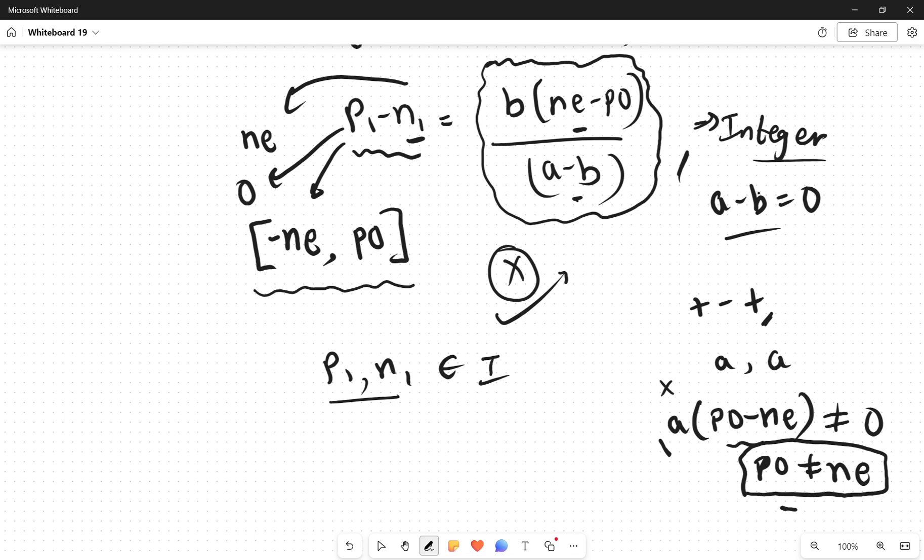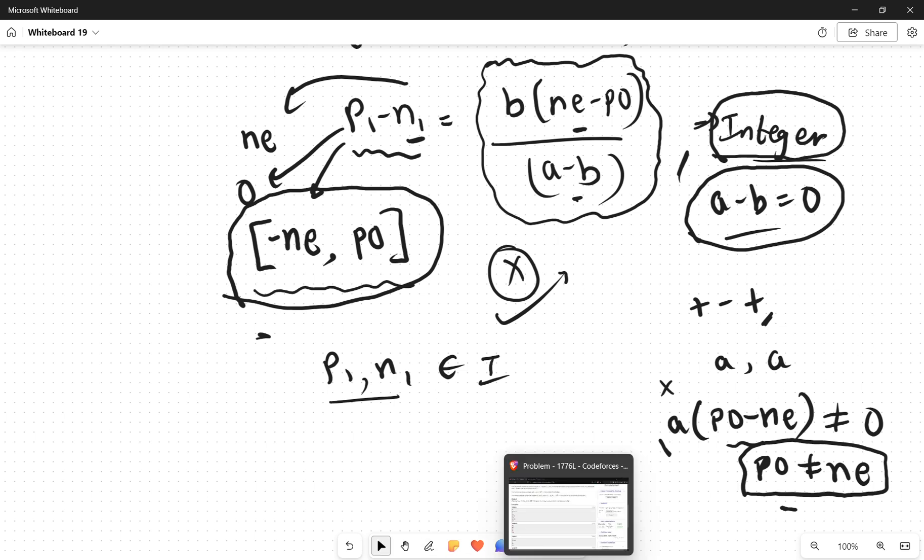So this is also the criteria. So this is one case we have to check: if a equals b then PO must equal NE. This is another case we have to check: that this is in fact an integer. And this is the third constraint: that this value should lie between minus NE to positive PO. So relatively a simpler question, just involved some maths. The code is pretty straightforward, you can take a look at this.